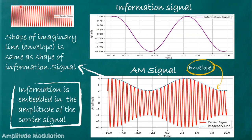Since the amplitude of the carrier is modified according to the instantaneous value of the information signal, the other parameters — frequency and phase — are kept constant. Here you can see the unmodulated carrier signal oscillating with a fixed amplitude, and the low frequency information signal. In the region where the instantaneous value of the information signal is decreasing, the amplitude of the carrier signal is also decreasing. After that point, as the instantaneous value of the information signal increases, the amplitude of the carrier signal also increases.